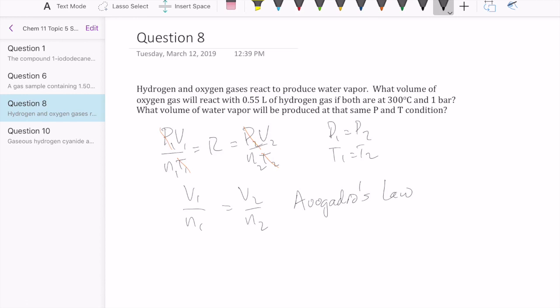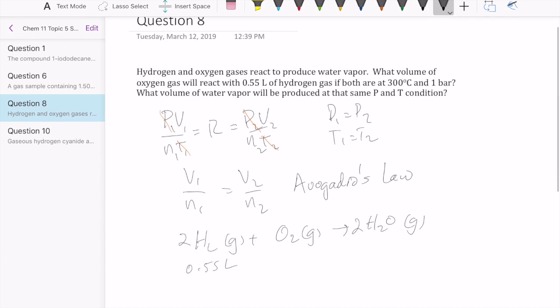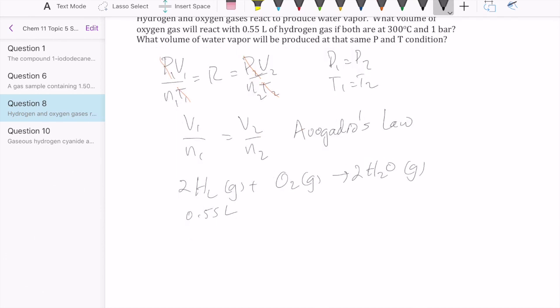Now we're trying to calculate how much of a reactant and product is being made, so we need to write our reaction. Hydrogen gas plus oxygen gas forming water gas. And if we balance this out, we get two and two. What we were told is that we have 0.55 liter of this. Question is how much of the other two gases would we need to use for the oxygen and how much we'll produce in the water.